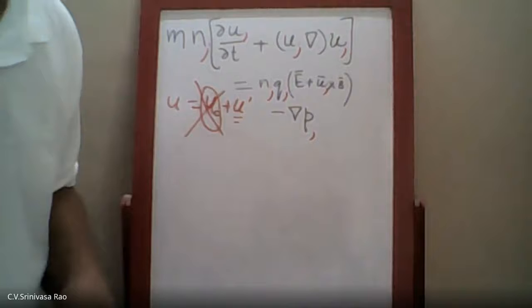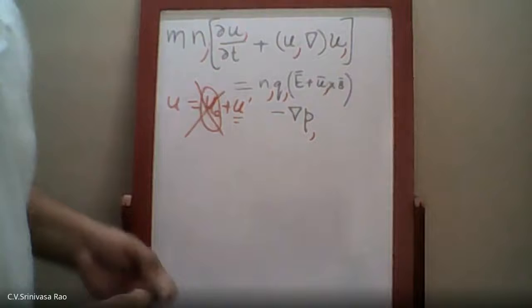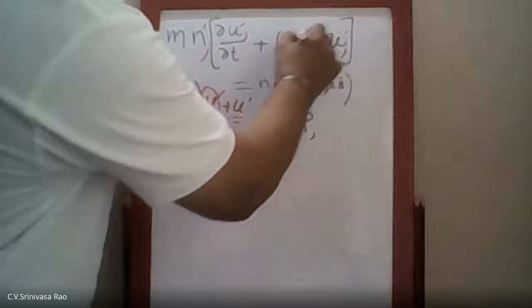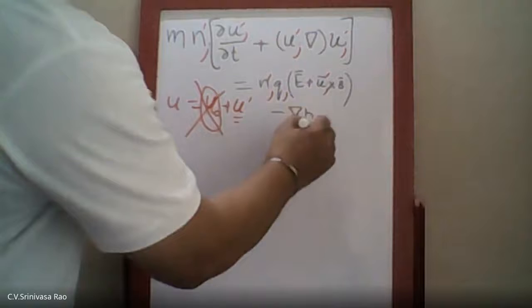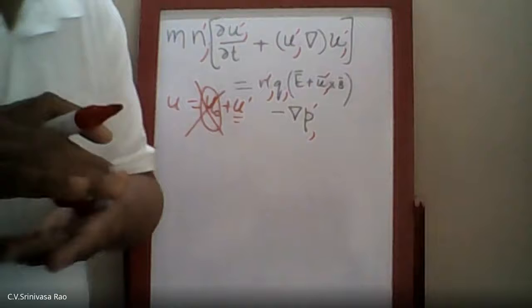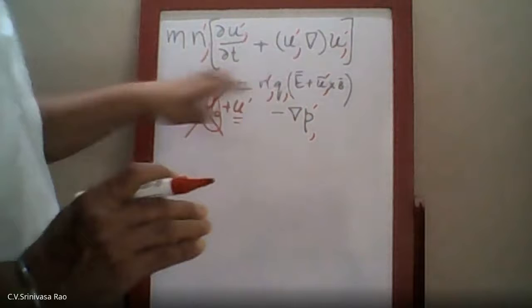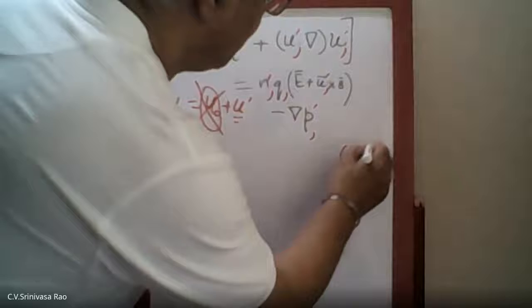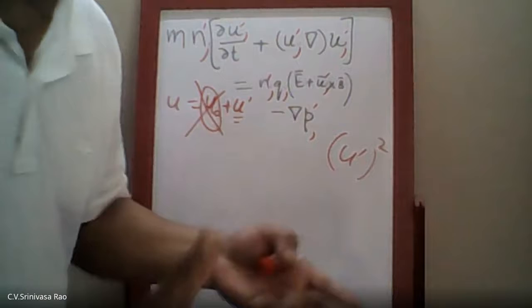All these equations will become equations for perturbed quantities only. We have removed the total equilibrium amount — we have taken only the variation part into account. Now you will see that the nonlinear term is basically u' squared. Since u' is a very small quantity, its square will be even smaller, so such quantities can be neglected.